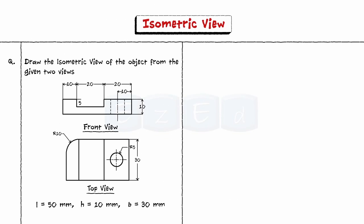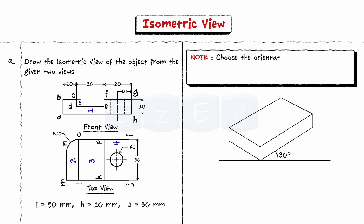Now with these dimensions draw a block with its sides inclined at 30 degrees to the horizontal reference line as shown. Now number the planes and name the corners in the given views as shown. Choose the orientation of the object such that maximum components of the object are visible in the isometric view.